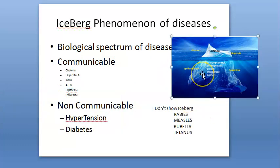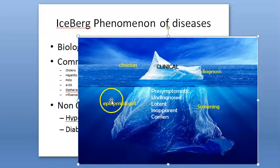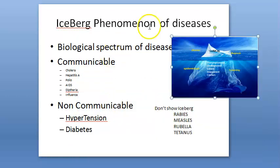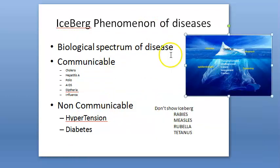Regarding the significance of the iceberg phenomenon: the hidden part of the iceberg constitutes an important undiagnosed reservoir of infection or disease in the community. Its detection and control is a challenge to an epidemiologist. That's all for the iceberg phenomenon of disease.